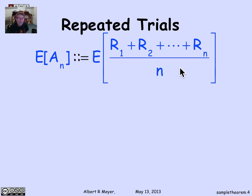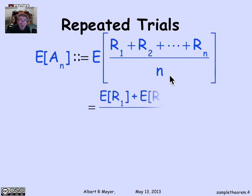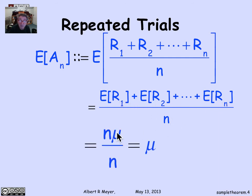The first question to ask is: what is the expectation of the average? The expectation of the average is, by definition, the expectation of the sum of the r's over n. By additivity of expectation, that's the sum of the expectation of each of the r's over n. But each of them has expectation mu, so the numerator is n·mu and the n's cancel. Sure enough, the average has the same expectation as each of the individual variables.